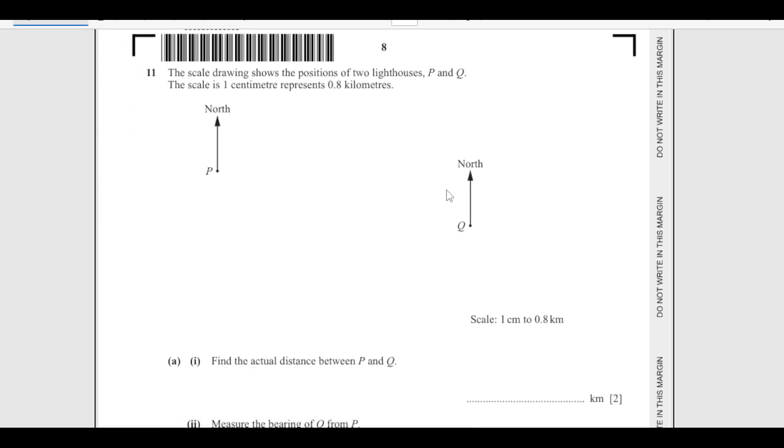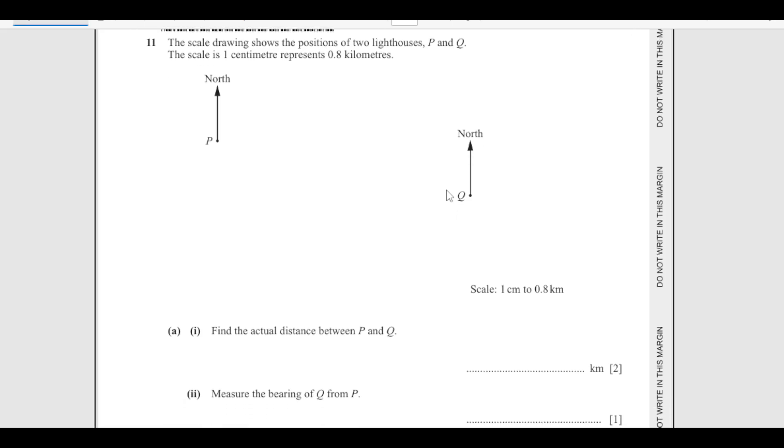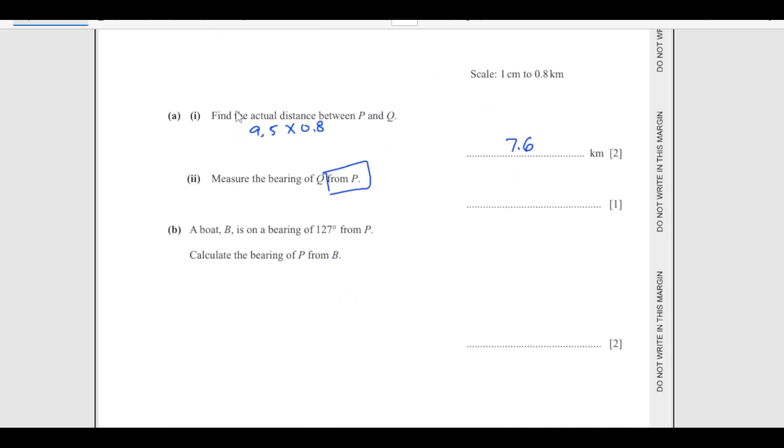Number 11: The scale drawing shows the position of two lighthouses P and Q. Find the actual distance between P and Q. Join this line PQ with ruler and then you measure how much is this. I am getting this one 9.5 centimeter. Scale is 1 centimeter equals 0.8 kilometers. So 9.5 times 0.8, that will be 7.6 kilometers. Measure the bearing of Q from P. You go at point P and then you measure this angle, this is the line of Q. This angle is coming out 102 degrees.